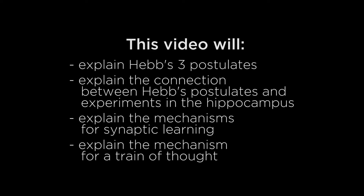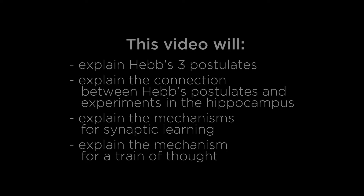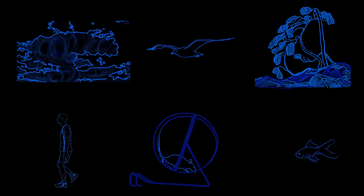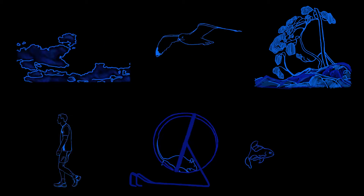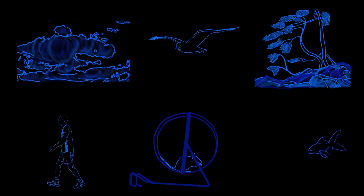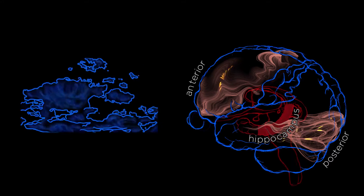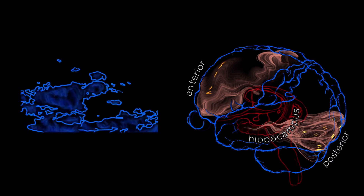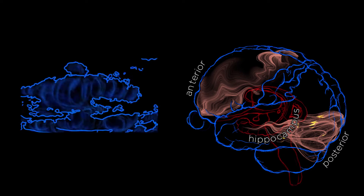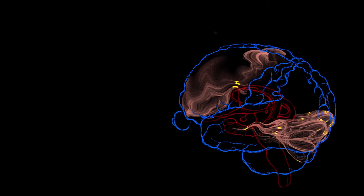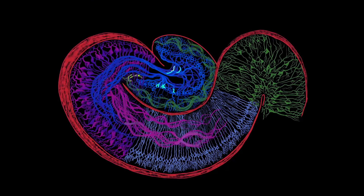We will begin by providing a sketch of Hebb's first two postulates. We will then explore these ideas in the context of our experience of daily events, such as clouds gathering in the sky, a bird flying by, seeing a tree in the wind, and so on. As you see here, the human hippocampus runs posterior to anterior. The hippocampus plays an important role in the consolidation of memory and spatial navigation.